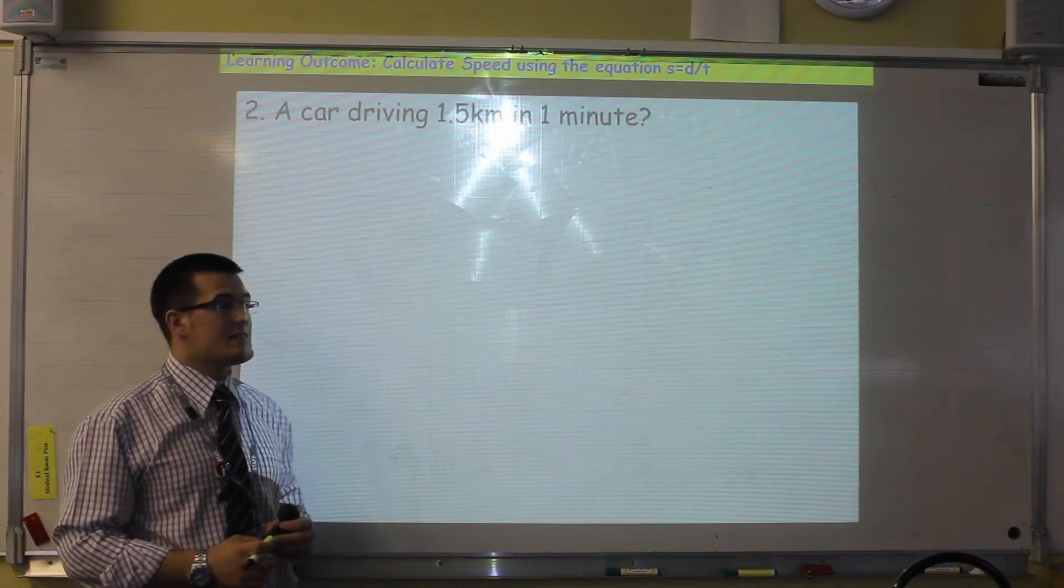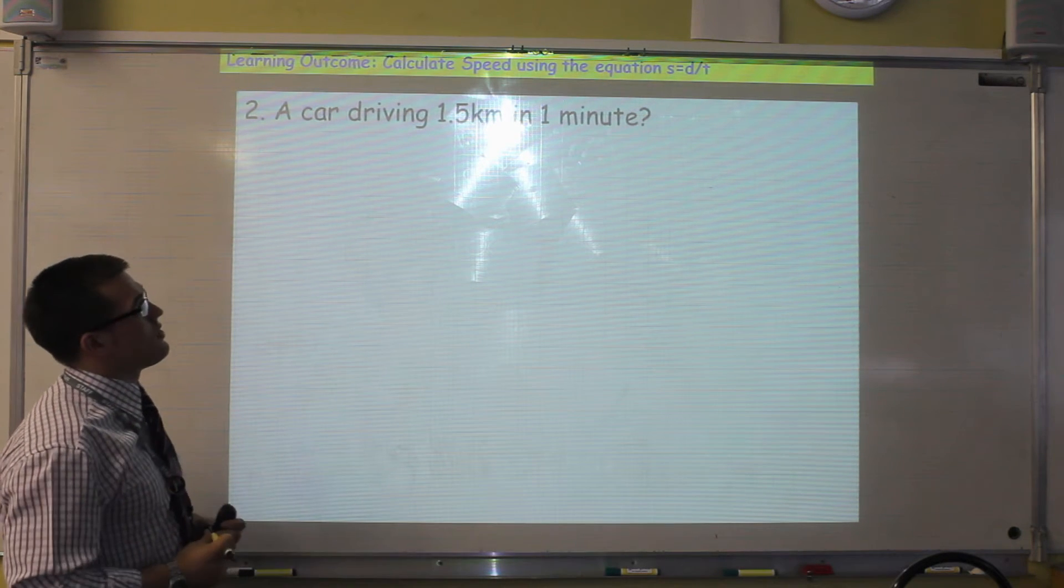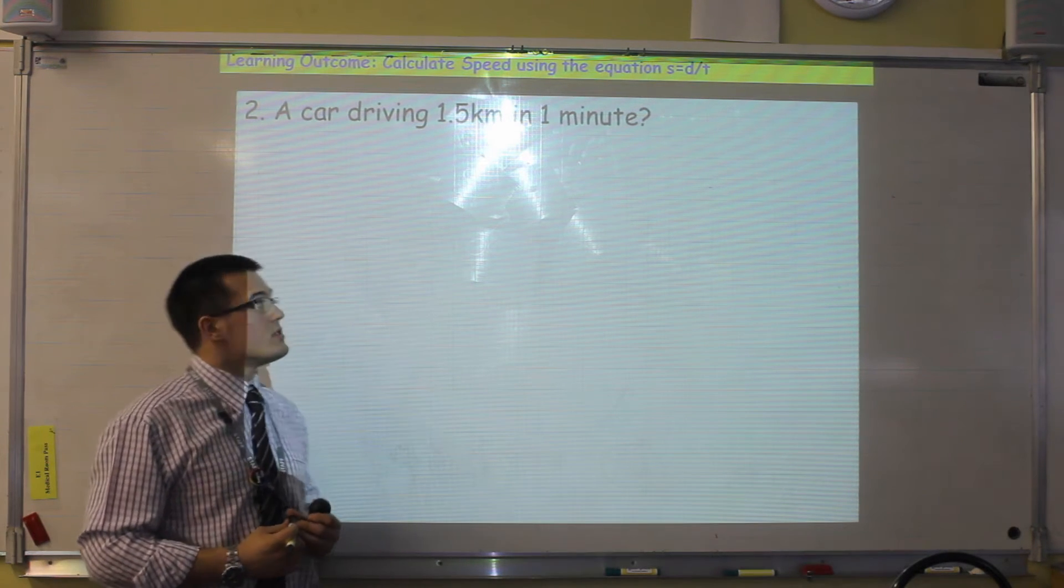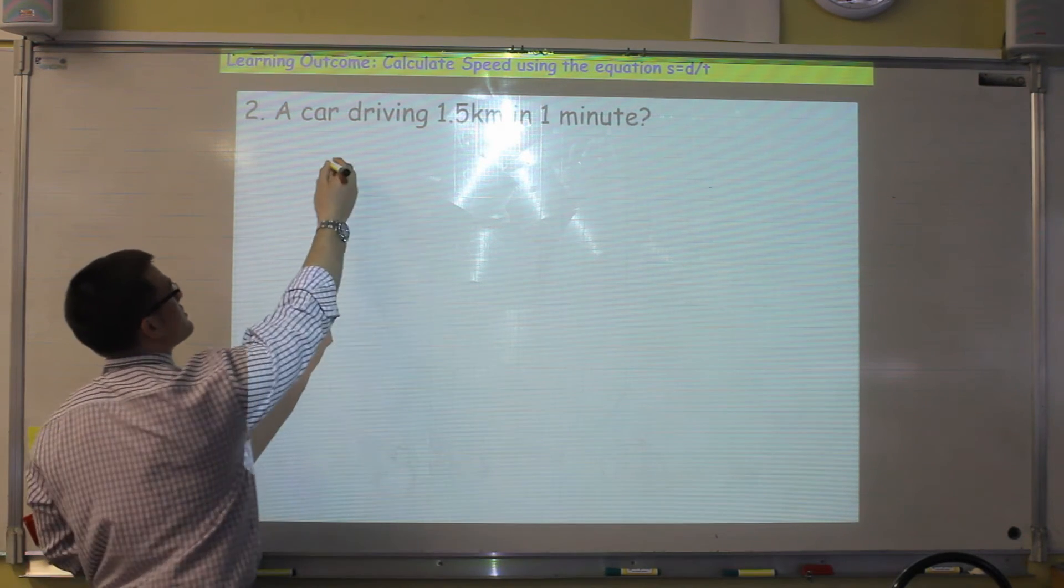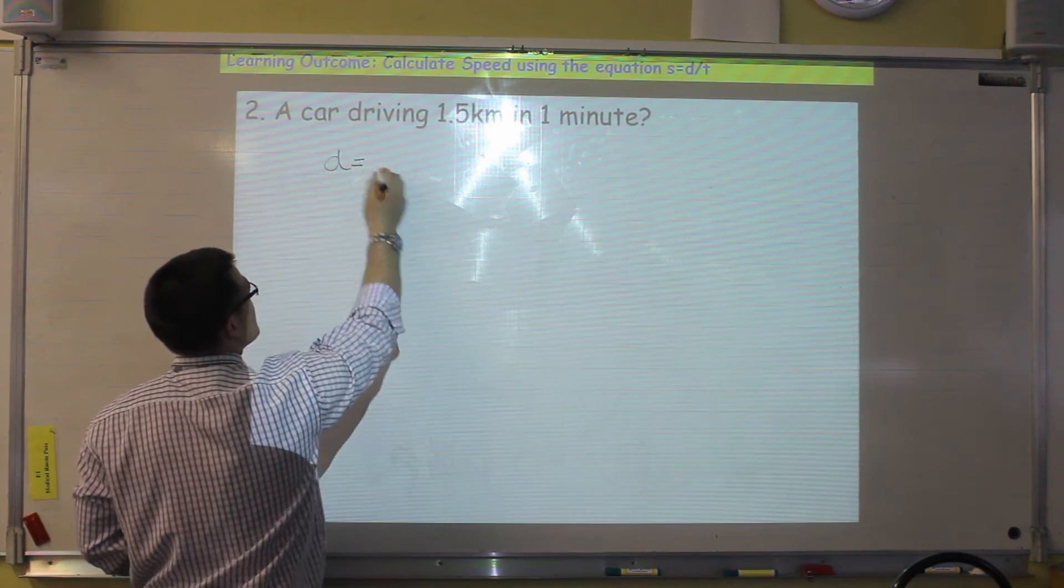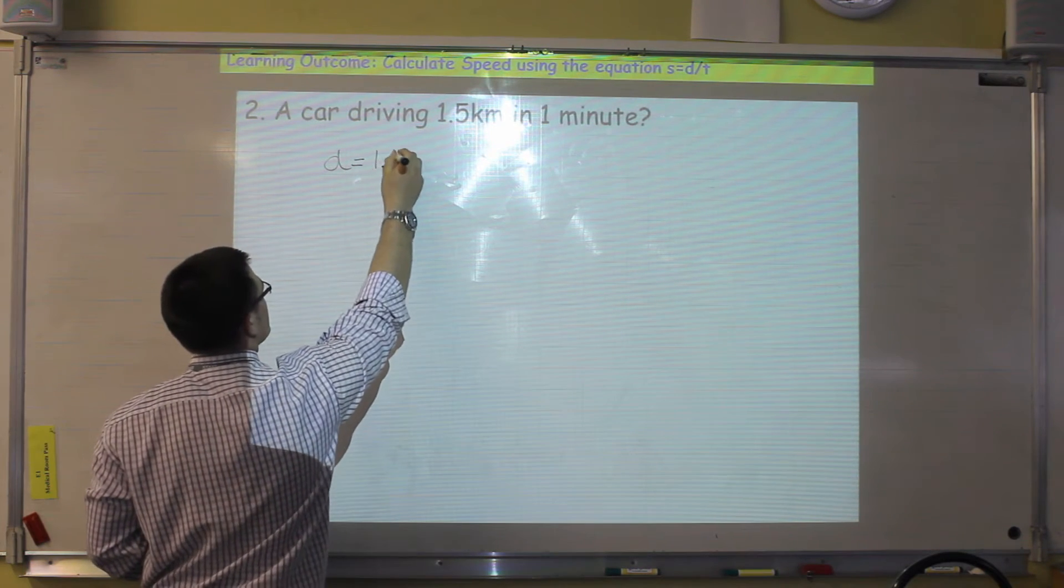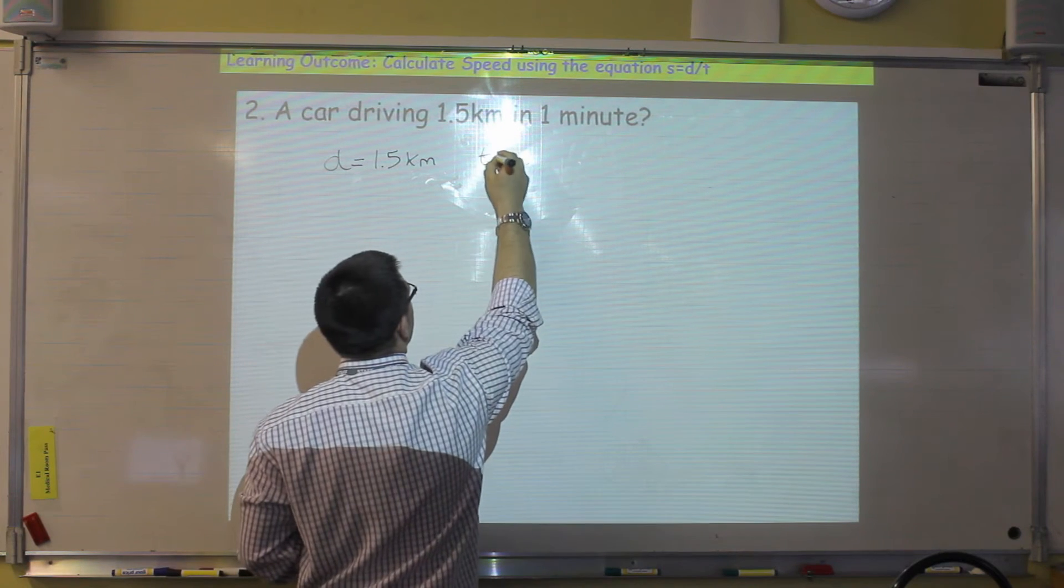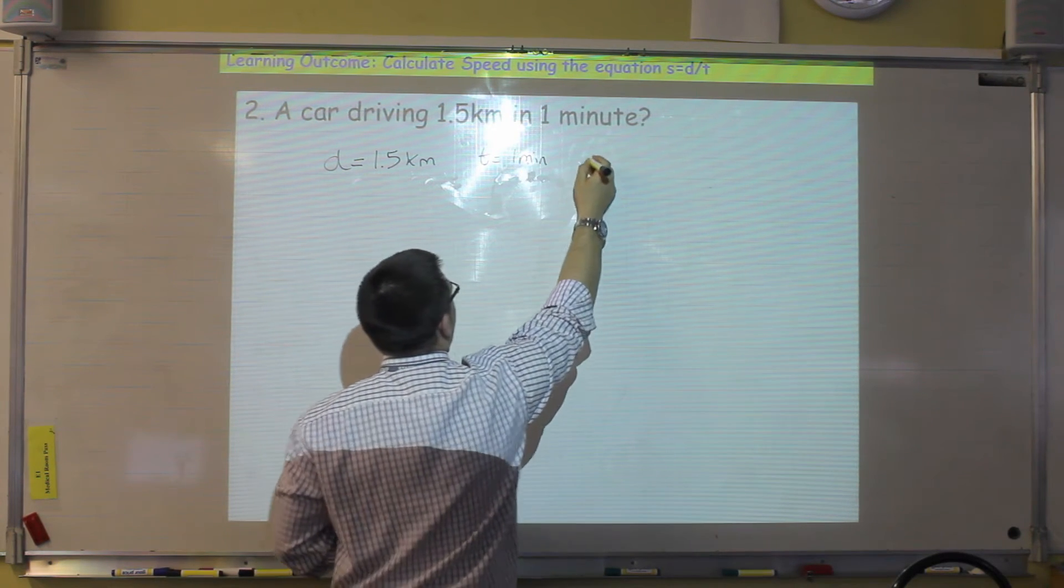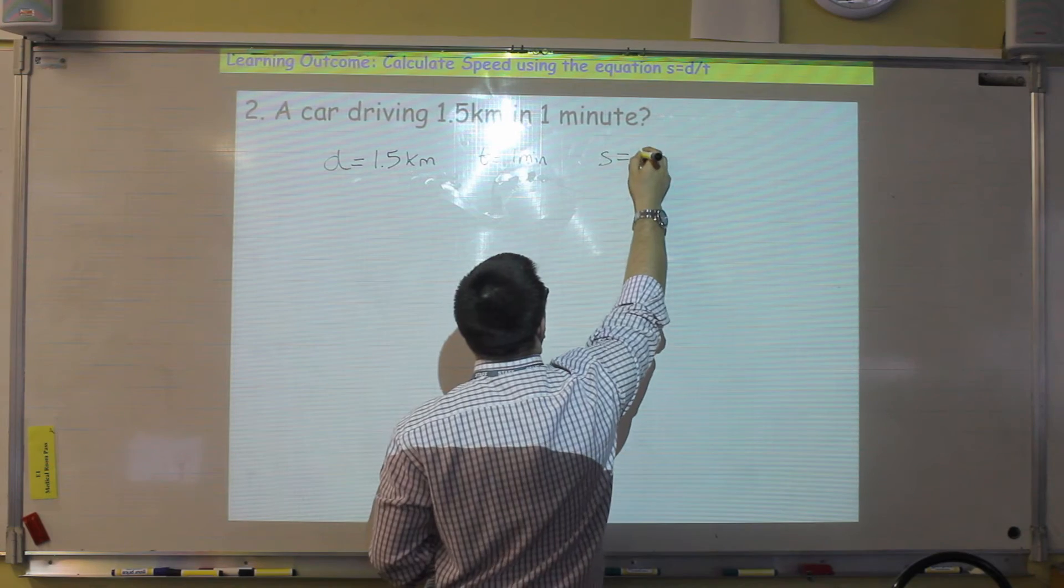Let's consider another example. This time, we have a car driving 1.5 kilometers in one minute. So the first thing we do is extract the information from the question. So our distance is 1.5 kilometers, our time is 1 minute, and our speed is what we're going to calculate.